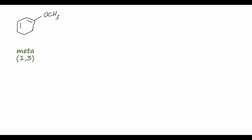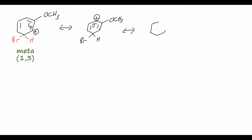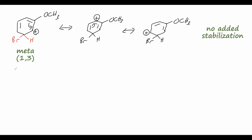Now let's consider the bromine attacking one carbon over — this is called the meta position, also known as 1,3-di-substituted. We have the bromine and hydrogen on the same carbon, with the positive formal charge on the adjacent carbon. We can draw a variety of resonance structures by moving the double bonds, placing the positive charge on different carbons. However, we run out of options — there is no configuration that allows the oxygen to donate its lone pair to the ring. So for the meta substitution, there is no added stabilization due to resonance.